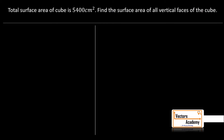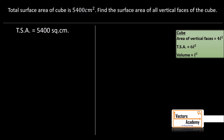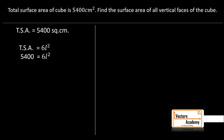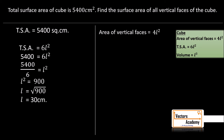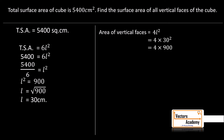The total surface area of a cube is 5400 cm². We have to find the surface area of the vertical faces. Using the formula 6L² = 5400, dividing by 6 gives L² = 900, and taking the square root gives L = 30 cm. Now using the area of vertical faces formula 4L², substituting L = 30, we get the area of vertical faces as 3600 cm².